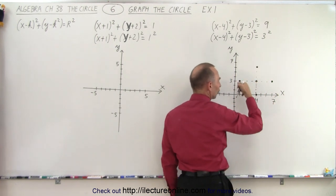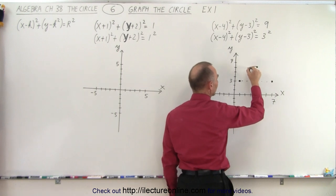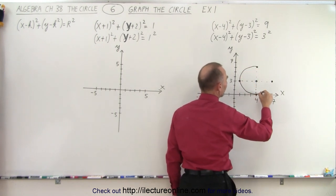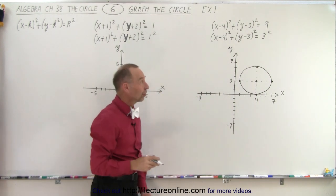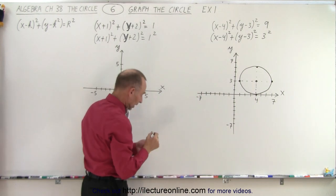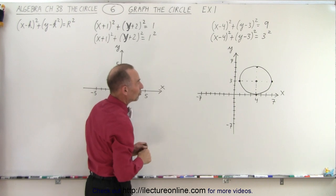And then you can see that those 4 points are on the edge of the circle. You can then connect those like this with a nice little circle. And that represents the circle that is equivalent to that particular equation.